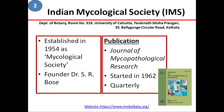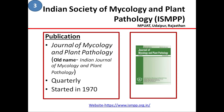Next in order comes Indian Society of Mycology and Plant Pathology, established in the year 1970. This society is based in Maharana Pratap University of Agriculture and Technology, Udaipur, Rajasthan. They publish a journal called Journal of Mycology and Plant Pathology, earlier named Indian Journal of Mycology and Plant Pathology. This is also published quarterly.